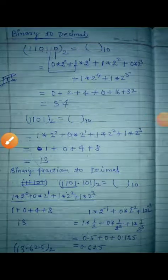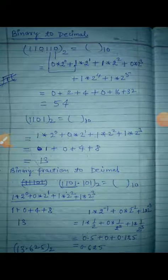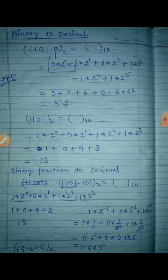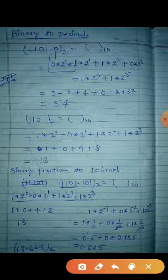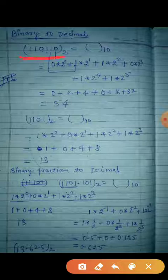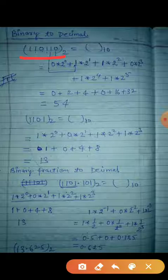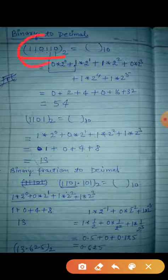Hi children, today I will tell you how to convert binary to decimal. It's not very tough, it's very easy — you can do it easily. Suppose a binary number is given here. The number which is a combination of 0 and 1 is called a binary number. You can see this one is a binary number.